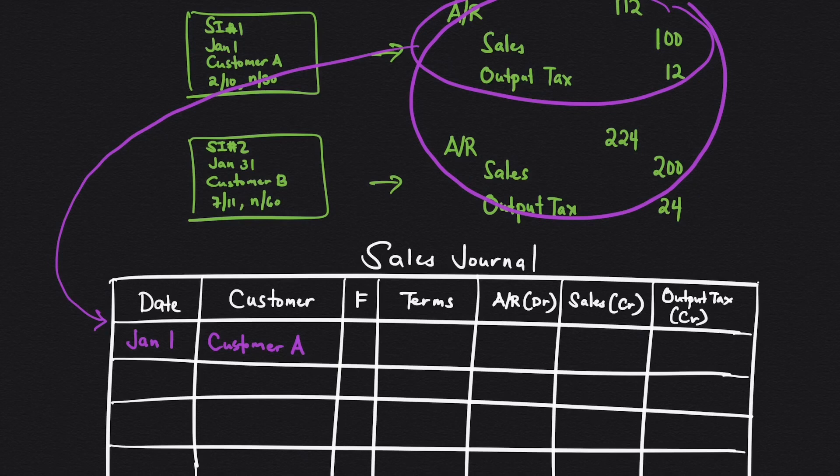The F here is called a folio. This is a posting reference column. Given that this is posting, it will be done later, so for now we will skip. Then, for the terms, we have 2/10, n/30. Then we transfer the amounts: 112 for A/R, 100 for sales, 12 for output tax.